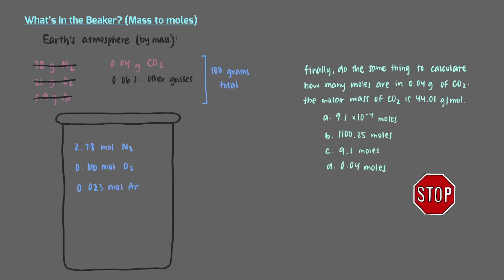Finally, do the same thing to calculate how many moles are in 0.04 grams of carbon dioxide. The molar mass of carbon dioxide is 44.01 grams per mole. By setting up this equation and multiplying it out, we see that there are 9.1 times 10 to the minus 4 moles in 0.04 grams of carbon dioxide. We'll put this final value in our beaker.